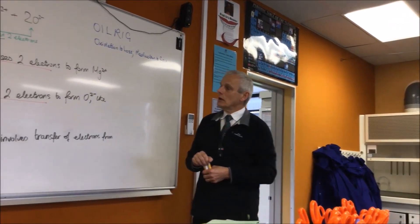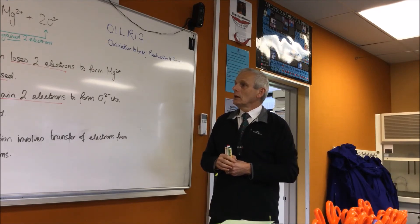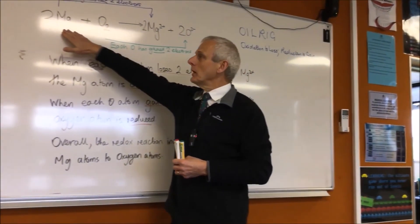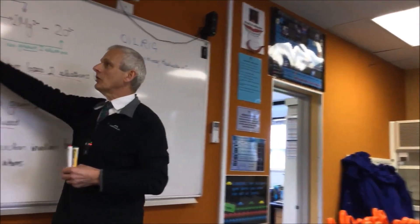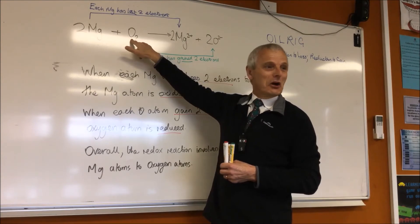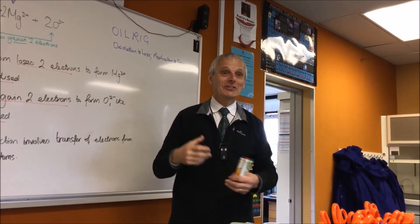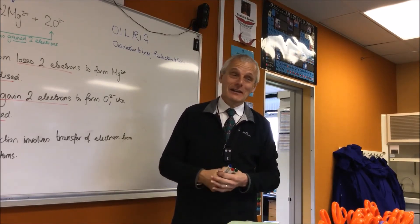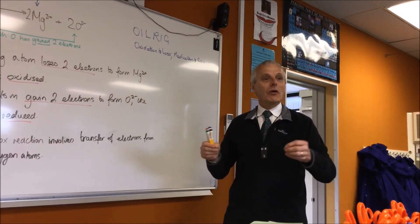Now, one final thing — we need to start labelling which things are oxidised and which have been reduced, and give them a name. In this reaction, magnesium is the thing being oxidised — and you'd expect that to be called the oxidant, but in fact it's called the reductant. The thing that gets oxidised in a reaction is called the reductant. The thing that's reduced is called the oxidant. You've just got to slow down and think it through carefully — don't try to write it straight out.